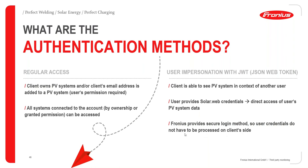With impersonation using the JSON Web Token, the user also provides SolarWeb credentials, giving direct access to the user's data. Fronius provides a secure logging method — once authenticated, you don't require additional credentials for access. Once SolarWeb login credentials are provided and you have the relevant API key, SolarWeb gives you a secure login and data transfer into the customer application.